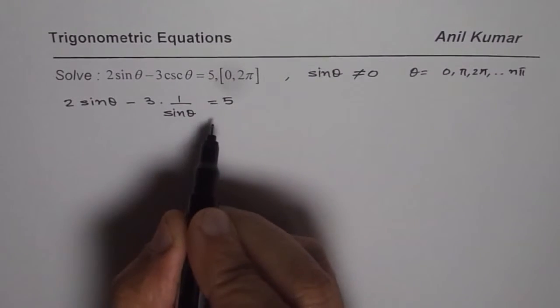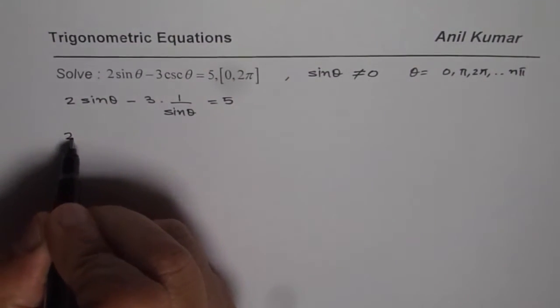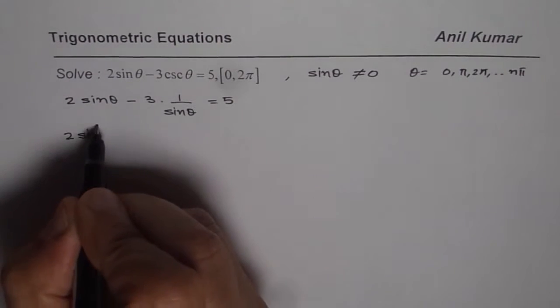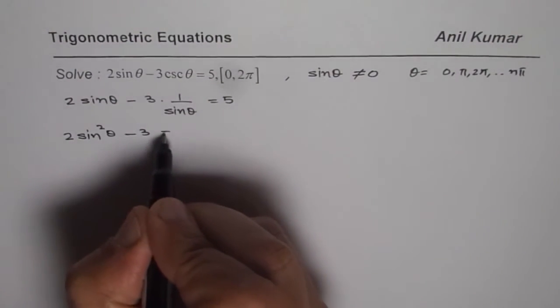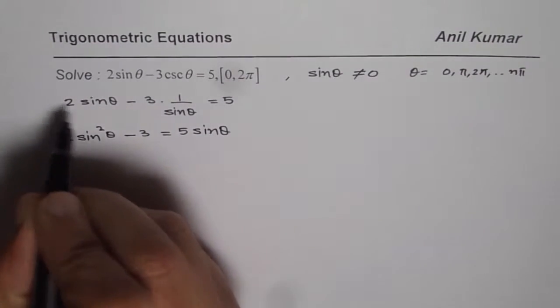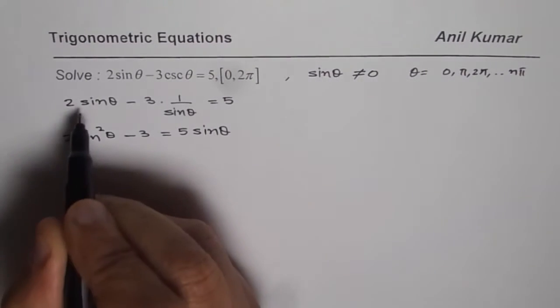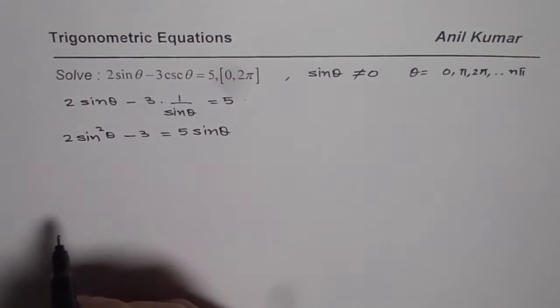Now let us multiply each and every term by sin theta. So what do we get? We get 2 sin square theta minus 3 equals to 5 sin theta. So when you multiply everything by sin theta, this sin theta cancels off. You get sin square theta and 5 times sin theta.